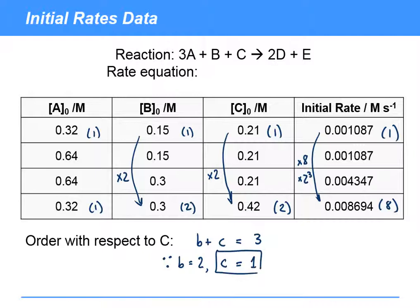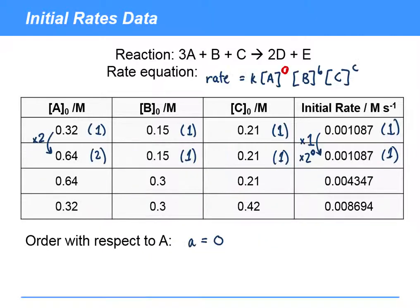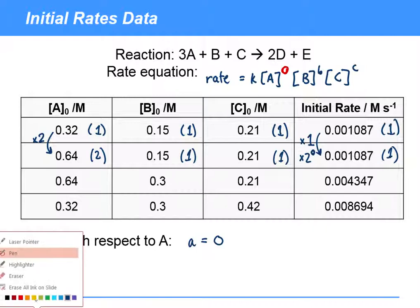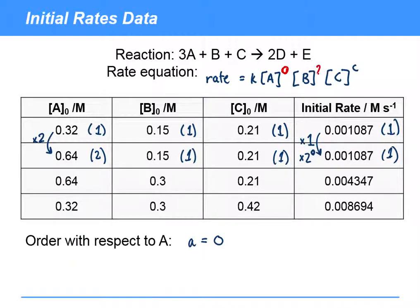And so we've got the orders in the rate equation of A, concentration of A is zeroth order, with respect to B is second order, and with respect to C is first order. Thank you.